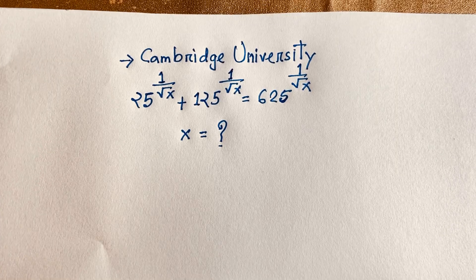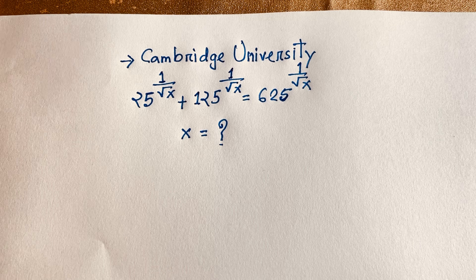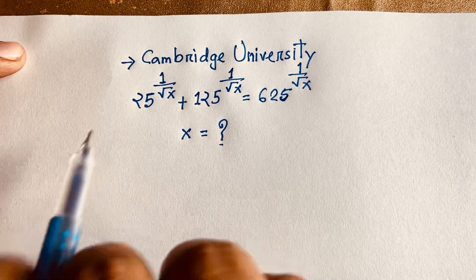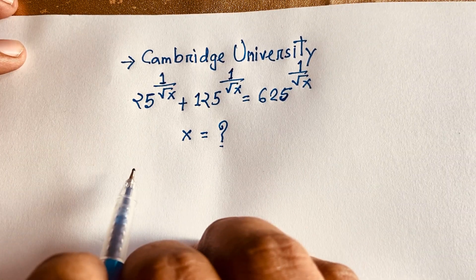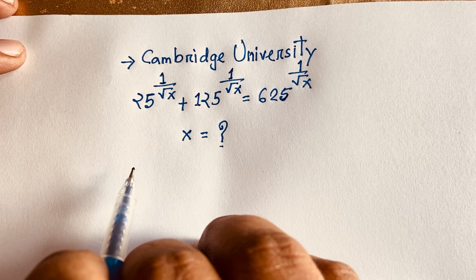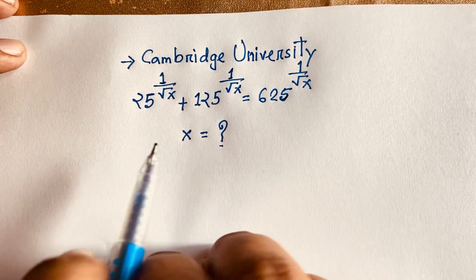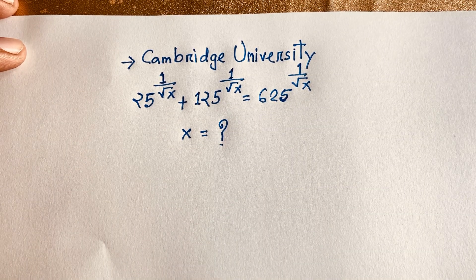Hello everyone. In this video, we have solved this interesting math Olympiad question. This question is: 25 to the power (1 over square root x) plus 125 to the power (1 over square root x) is equal to 625 to the power (1 over square root x). x is equal to what? How to solve this interesting math Olympiad question?